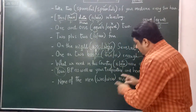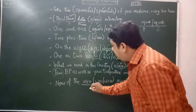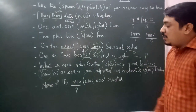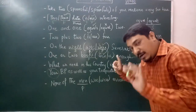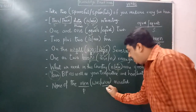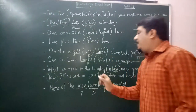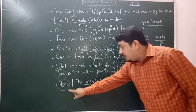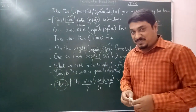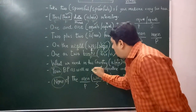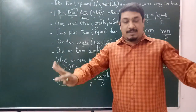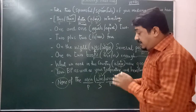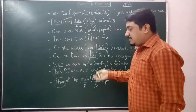Last question: 'None of the men was / were arrested.' You might think 'men' is plural, so 'were' should be the answer. However, there is a grammar rule: whenever 'none' appears in a sentence, you must use a singular verb. 'None' separates each one individually, making each one singular. So the right answer is 'none of the men was arrested'. It sounds a little unusual, but that is the rule.